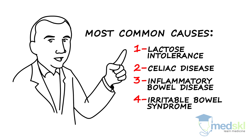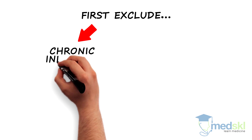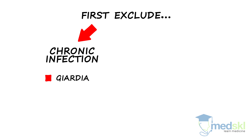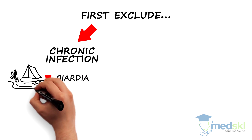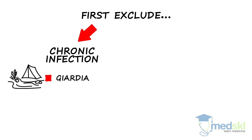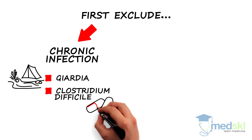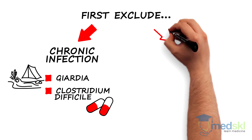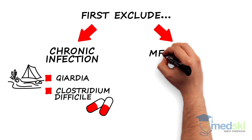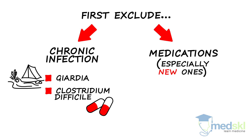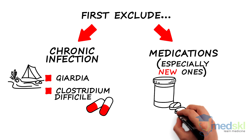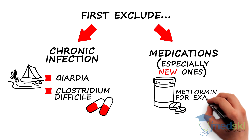A very practical approach to this problem is as follows. First, exclude chronic infections, most notably giardia in campers and well water drinkers, and clostridium difficile with antibiotic use. Also exclude medications, especially new ones, with metformin being a good example.